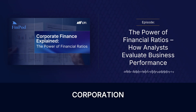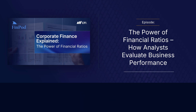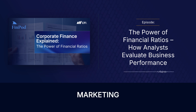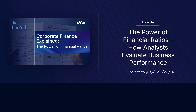Every major corporation you can think of — from the Apples of the world right down to the big failures like Enron — they all have a story, a real story. And that story isn't really told in their mission statements or the marketing fluff. It's told pretty clearly through numbers. Financial ratios are like the essential shorthand for that.